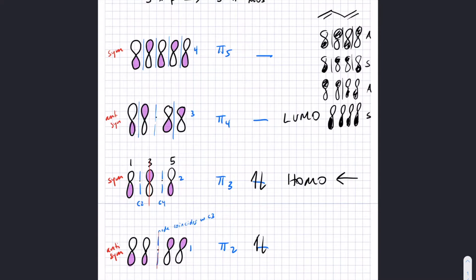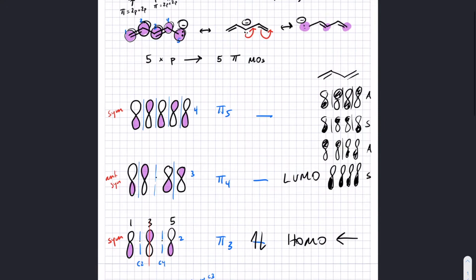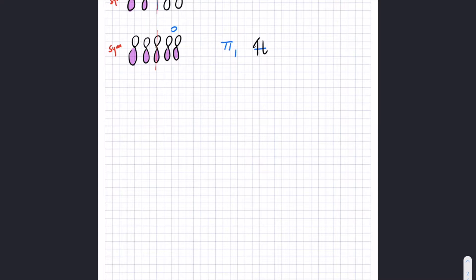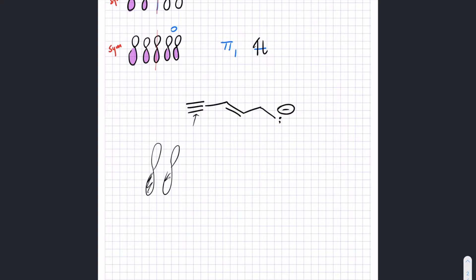For triple bonds: a triple bond can participate in resonance, but only one of the two pi bonds can be involved. With a triple bond, one pi bond comes from p orbitals in one direction, and the other pi bond comes from p orbitals in an orthogonal direction. So for a triple bond, only one of the two pi bonds can be involved in resonance.